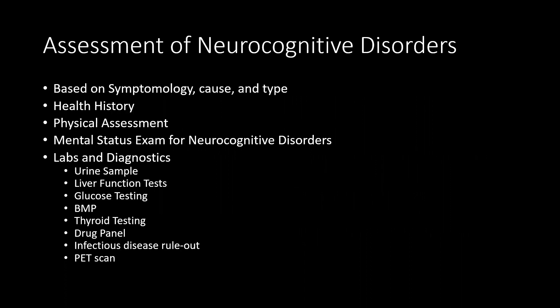When assessing someone with a neurocognitive disorder, we base it on symptomology, cause, and type. We will look at a health history, do a physical assessment, and a mental status exam. We can also do labs and diagnostics, mostly to rule out other causes.